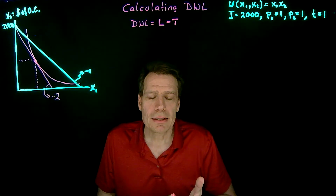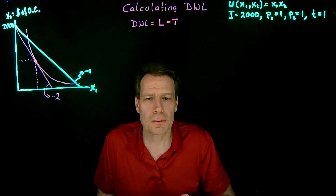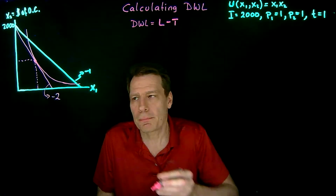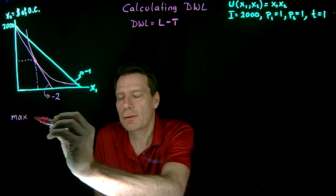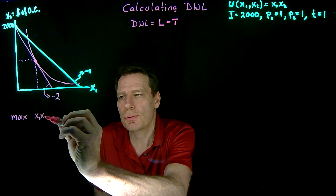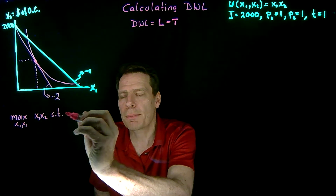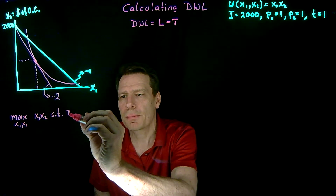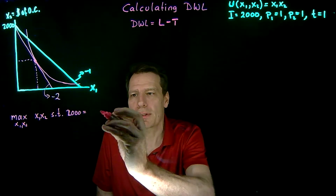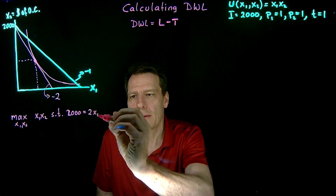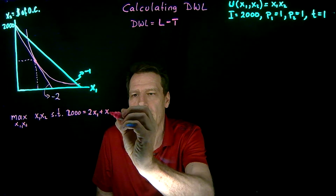The first step in linking the math to the graph is to figure out what that bundle is, and we know how to do that — we simply solve a utility-maximization problem. The consumer, after facing the tax, wants to maximize utility given by x1 times x2, by choosing x1 and x2, subject to the budget constraint. The budget constraint now is that income, 2,000, equals the price of good one times x1 — that's two times x1 — plus the price of good two times x2, but the price of good two is just one, so it's plus x2.